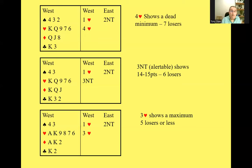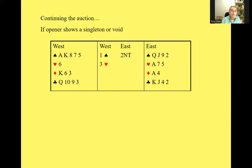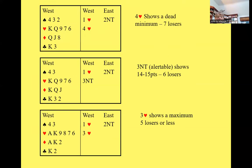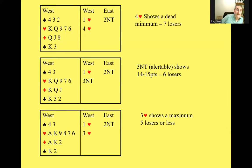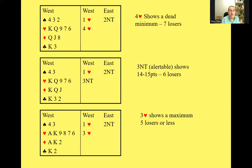A question was asked about the three no trump response: does it have to show any stoppers or be completely balanced? No — it's not about balance, it's about losing tricks. It's just that it's in between the other two responses and typically shows six losers. It definitely doesn't say you've got a balanced hand. Although if you had a singleton, you would prefer to show that by bidding the suit at the three level. So three no trump shows a hand that probably doesn't have a singleton and probably doesn't have a strong second suit either.